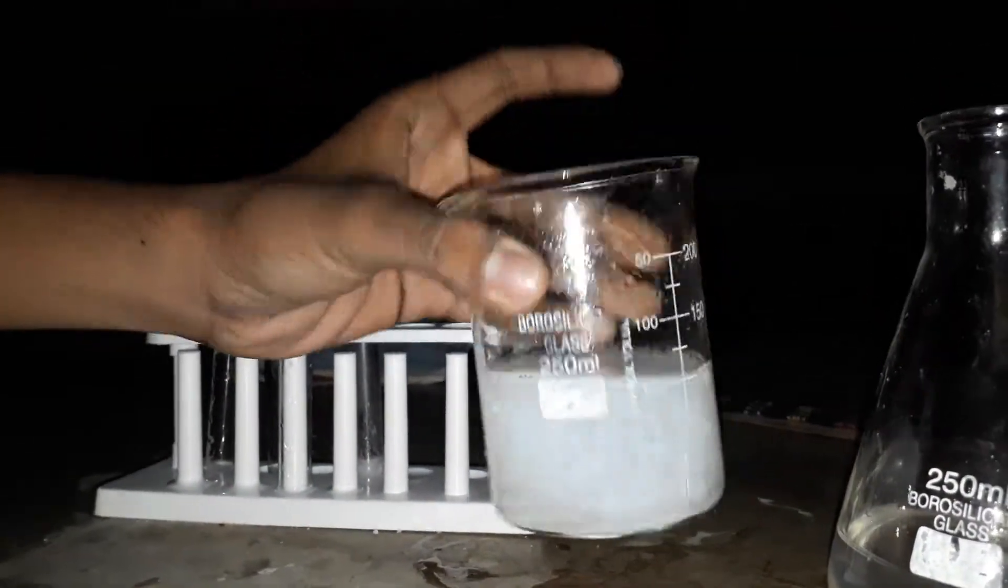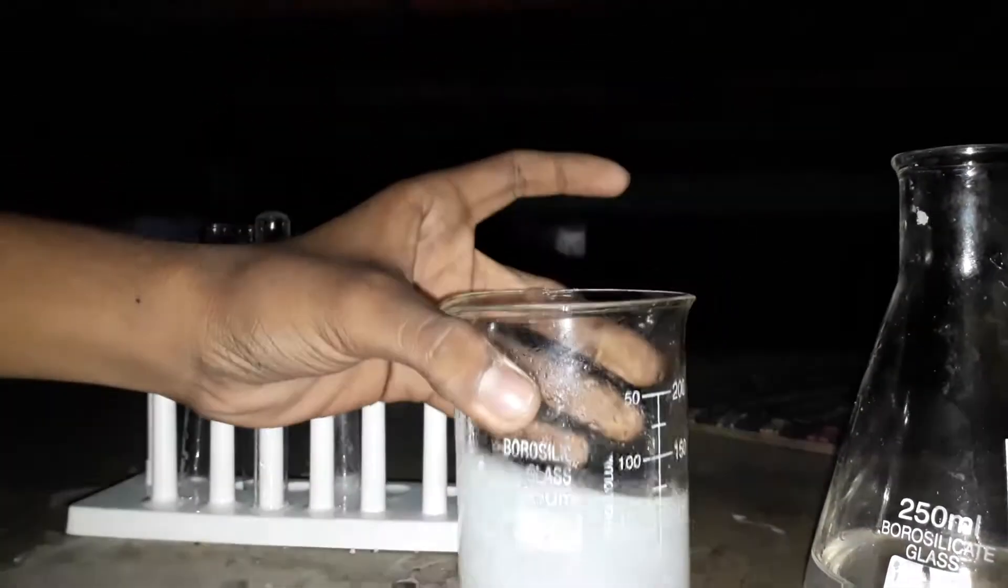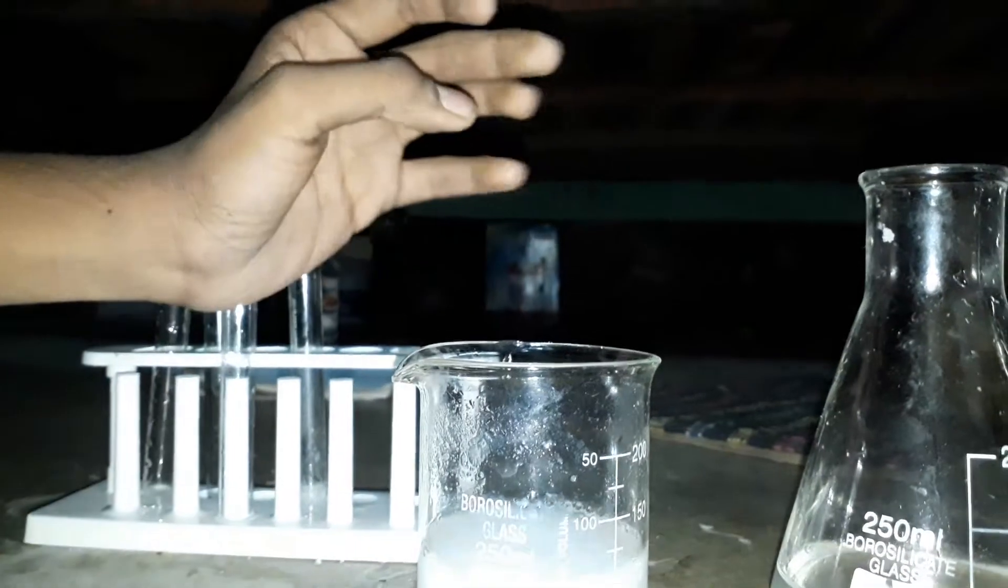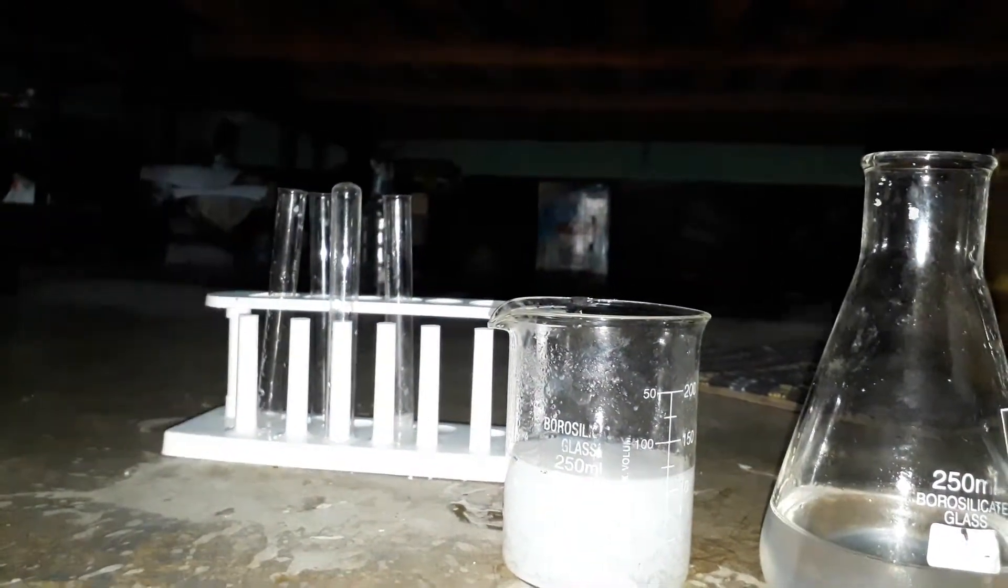As you can see there is a white precipitate that indicates the presence of magnesium ions in this solution. So this is Mg2+ solution and this is Na+ solution, because it was magnesium sulfate heptahydrate and it was sodium chloride or daily food salt.